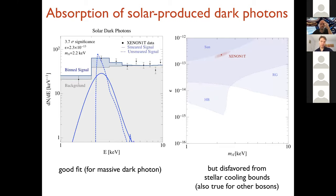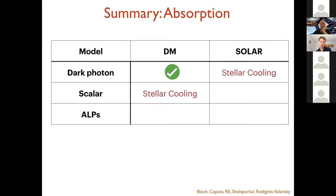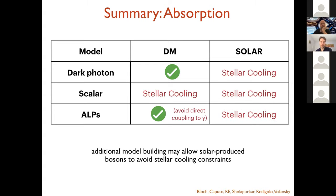Instead of being the dark matter itself, the dark photon could also be produced in the sun. In this case, there's a spectrum that you have to fit. The spectrum looks like this, the dashed line, and once you smear with a detector resolution, you get this nice fit, in this case 3.7 sigma. But if you ask does this work with the model parameters that you need, the answer is that you're disfavored by stellar cooling bounds. This is also true generically for other bosons as well.